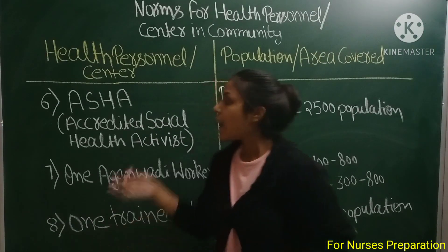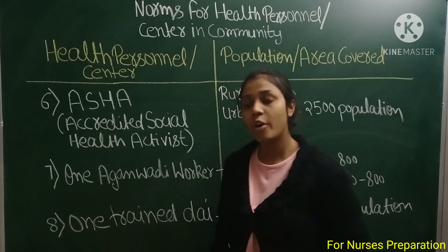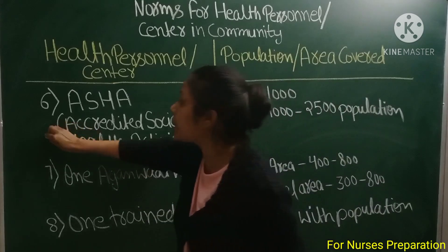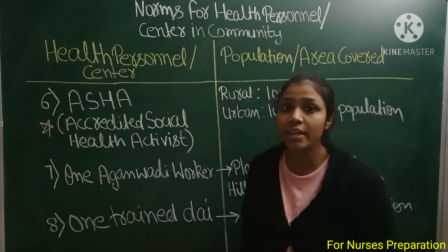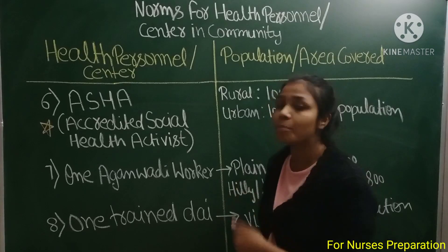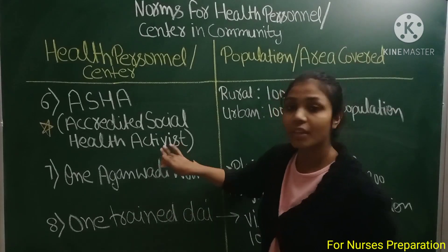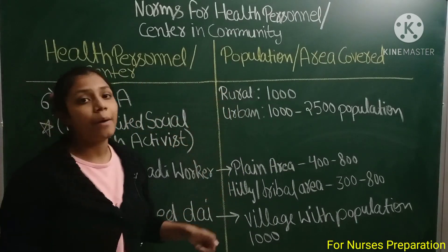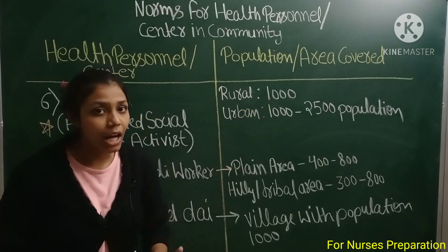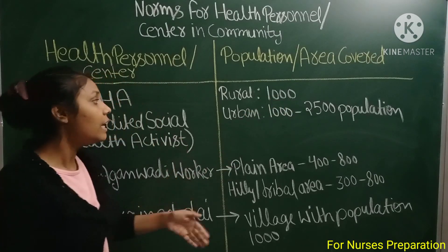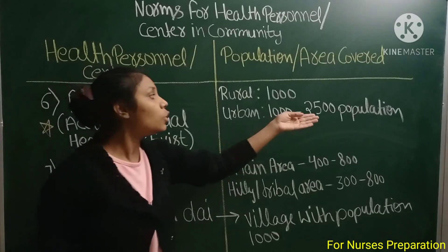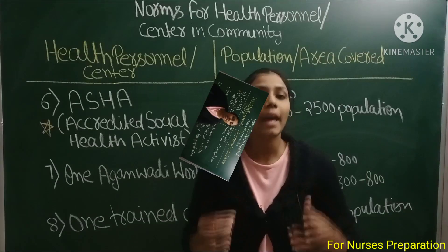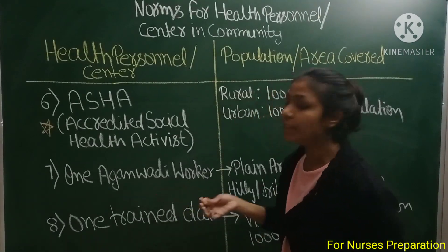Next is ASHA. ASHA की full form है Accredited Social Health Activist. ASHA की full form exams में कई बार पूछी गई है, तो आने वाले exams में भी बहुत बार ये पूछी जा सकती है — so make it a star point. ASHA rural area में 1000 की population में एक ASHA appoint की जाती है, वहीं urban area में 1000 से 2500 की population पर एक ASHA appoint की जाती है.